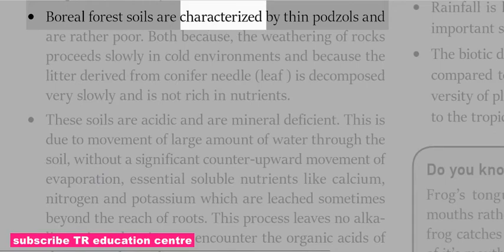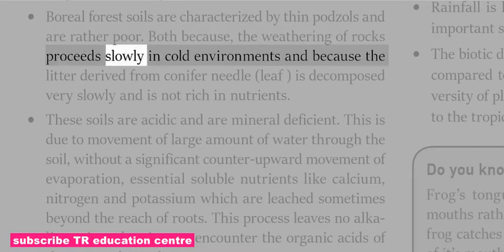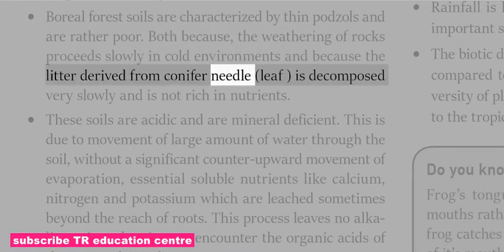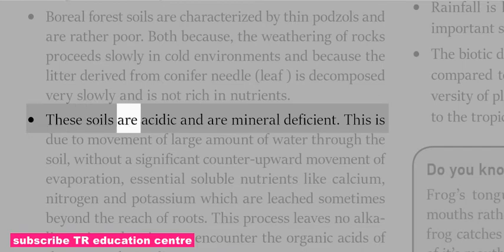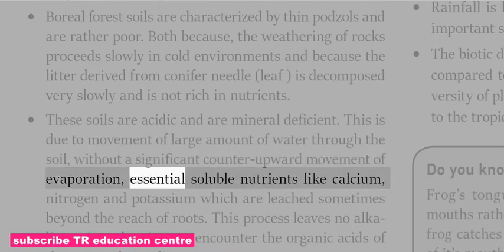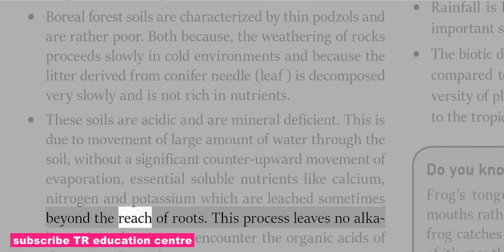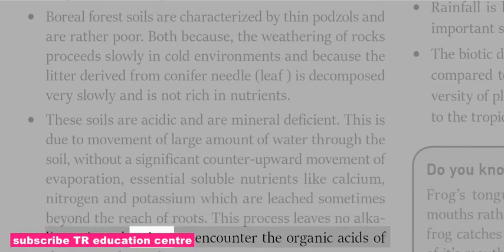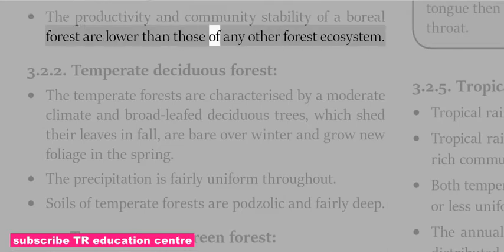Boreal forest soils are characterized by thin podzols and are rather poor, because the weathering of rocks proceeds slowly in cold environments and the litter derived from conifer needle leaf is decomposed very slowly and is not rich in nutrients. These soils are acidic and mineral deficient due to movement of large amounts of water through the soil, causing essential soluble nutrients like calcium, nitrogen and potassium to be leached beyond the reach of roots. The productivity and community stability of a boreal forest are lower than those of any other forest ecosystem.